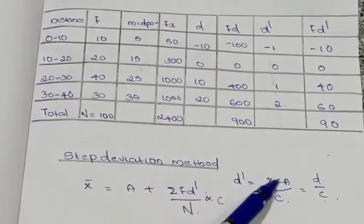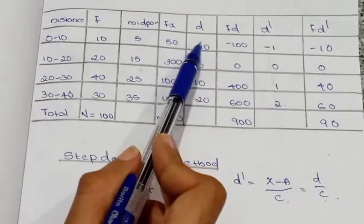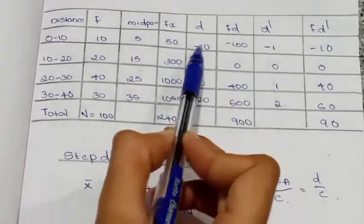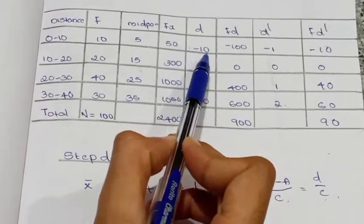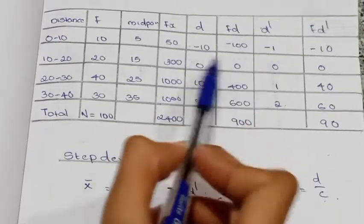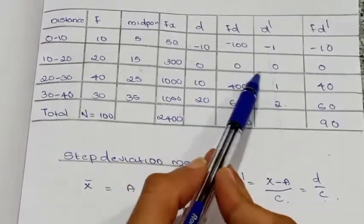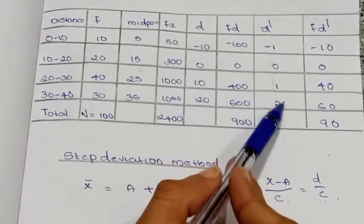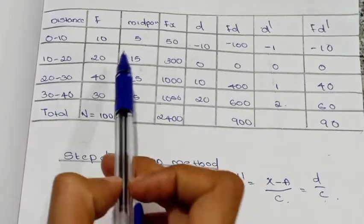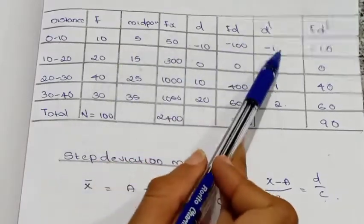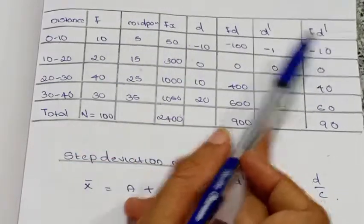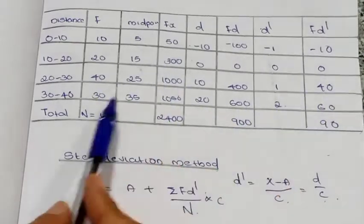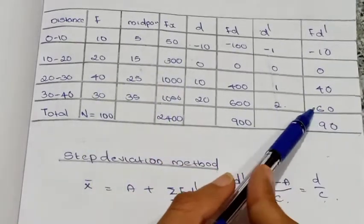For d equals minus 10, d' equals minus 10 divided by 10 equals minus 1. For d equals 0, d' equals 0. For d equals 10, d' equals 10 divided by 10 equals 1. For d equals 20, d' equals 20 divided by 10 equals 2. The fd' values are: minus 10, 0, 40, and 60.